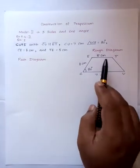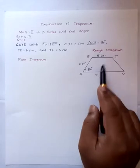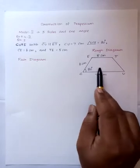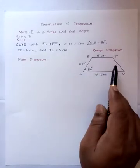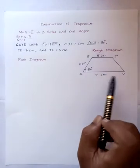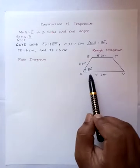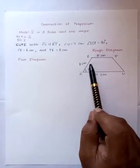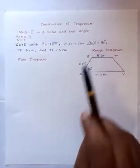Trapezium rough diagram: one pair of opposite sides are parallel, another pair of opposite sides not parallel. Given measurements: CU equal to 7 cm, angle UCE 80 degrees, CE 6 cm, and ET 5 cm.